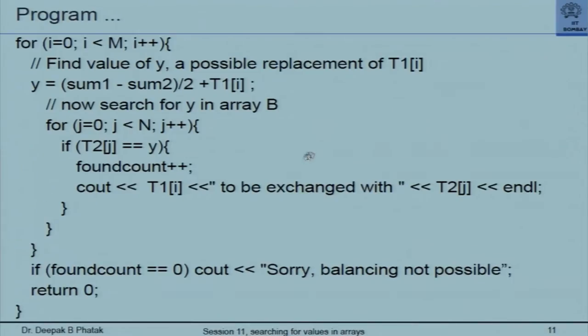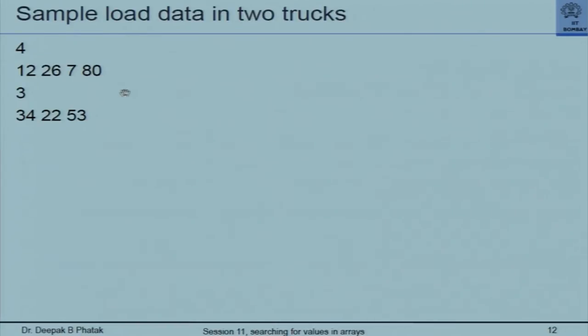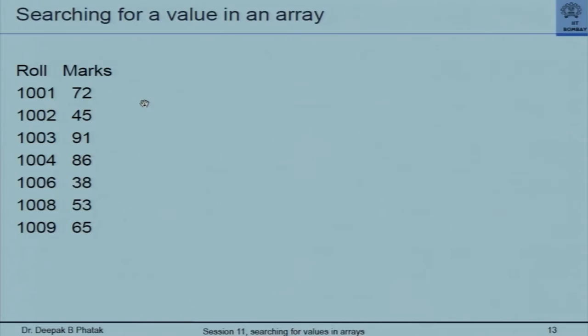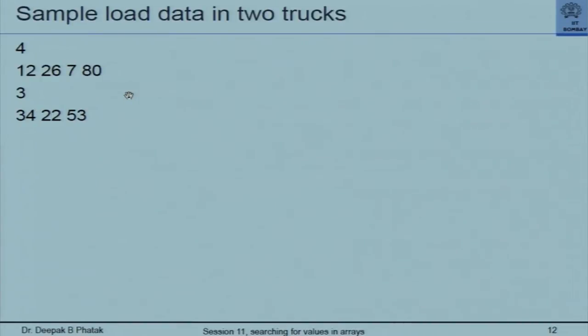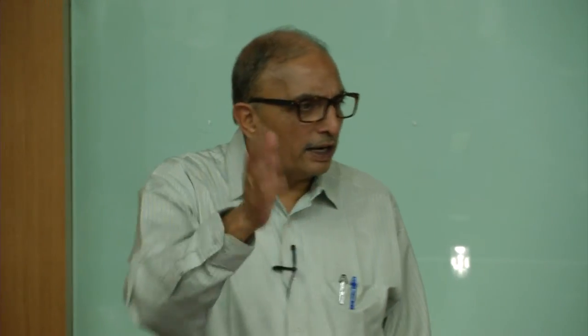It is useful that even when I write illustrative programs on the board or in slides, I should write them in the way I expect my students to write. If the program I show contains no comments, it will be wrong to expect students to write comments. In our tutorial discussions we actually first write only comments, leaving space for code and declarations. Only comments — that is considered a good way of program design. You design different parts of the program in your mind, write English comments on what that part will do, and then write the code. The sample load data has four packages in one truck and three in the other.